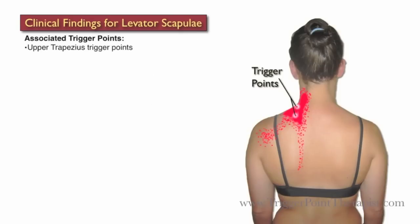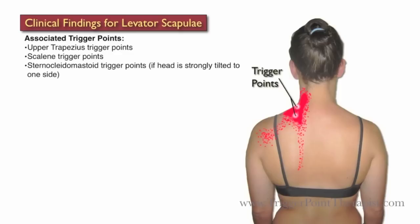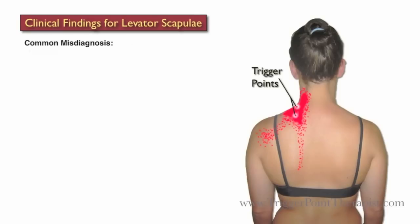Trigger points associated with the levator scapula include the upper trapezius and the scalenes. If the head is strongly tilted to one side, SCM trigger points will also be involved. Clients with active trigger points in the levator scapula are often misdiagnosed with torticollis or simply a stiff neck.